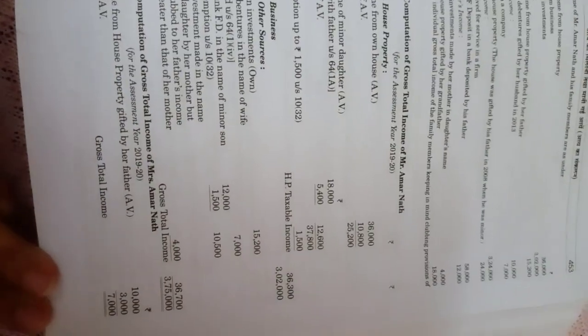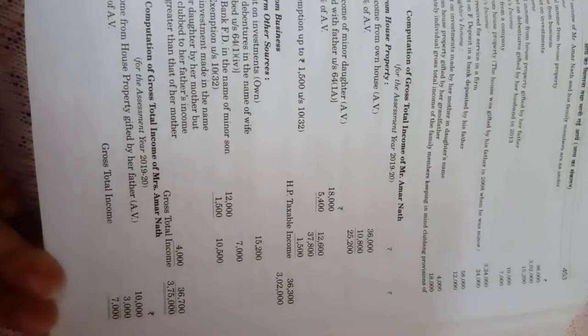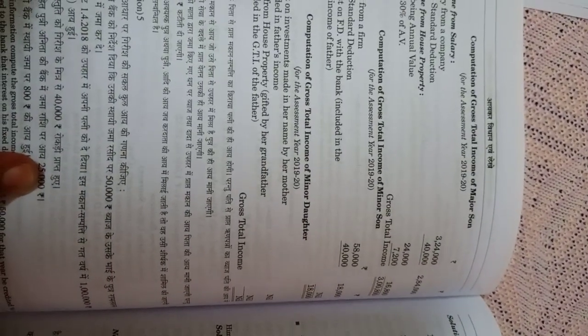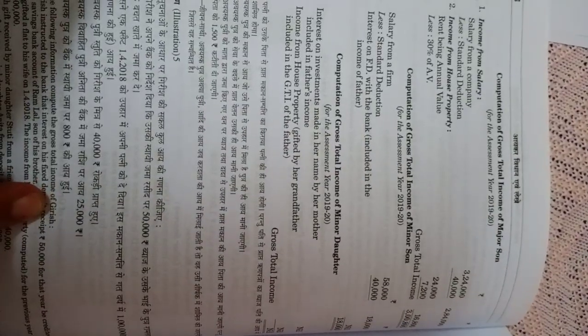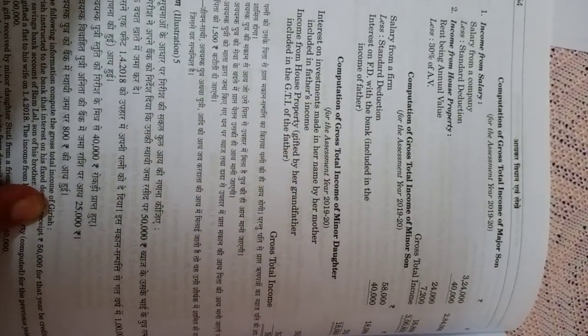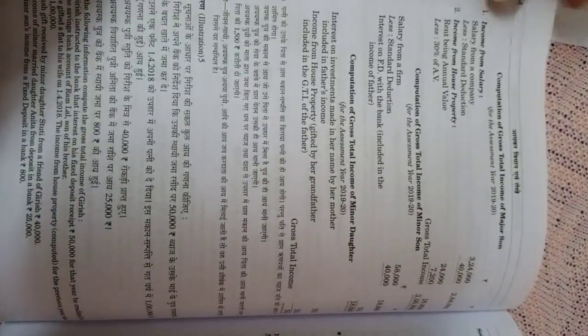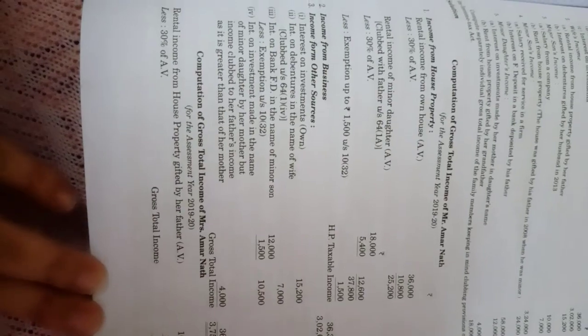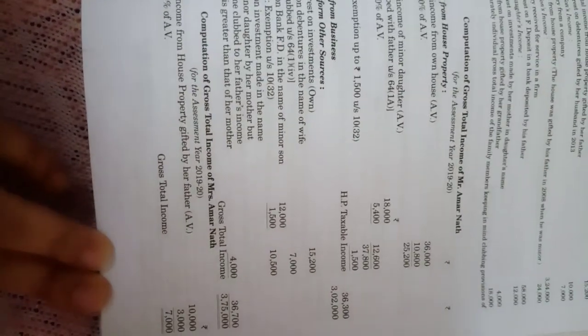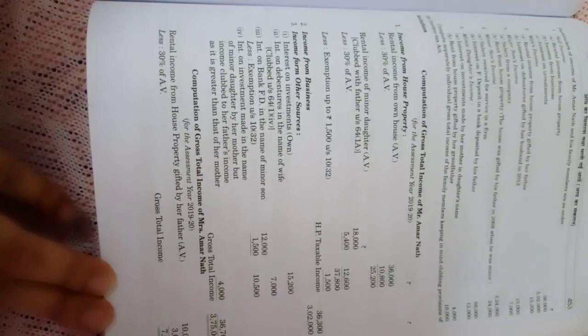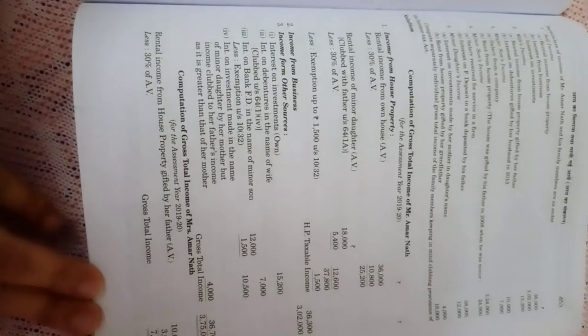Gross total income of Mr. Amarnath (father) is ₹3,75,000. Mrs. Amarnath's gross total income is ₹7,000. Major son's gross total income has been calculated. For the minor daughter there is no separate income, because the father is having more income than the mother, so all minor children's income is clubbed with the father.